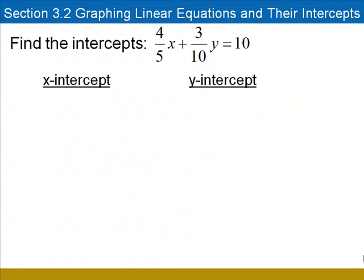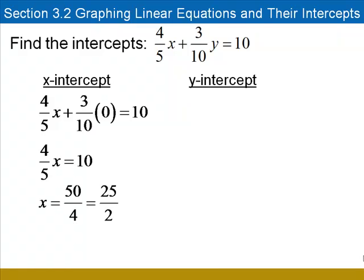Here's another example involving coefficients that are fractions. To find the x-intercept, we'll put in 0 for y and we're left with the equation 4 fifths x equals 10. To solve this equation, multiply both sides by 5 fourths, which gives us the solution x equals 50 fourths, or simplified, 25 halves. The x-intercept is at 25 halves comma 0.